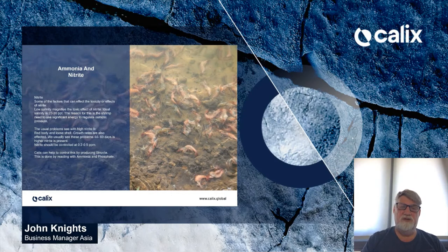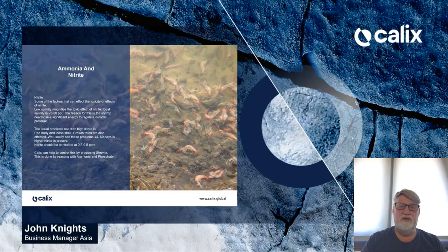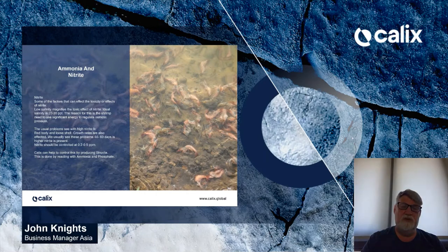Nitrite is more toxic than ammonia, and some of the factors that can affect the toxicity of nitrite include low salinity. Low salinity has a toxic magnifying effect. Ideally salinity should be in the 20 to 30 parts per million range. However, we see cultures down to 5 to 10, and this means the nitrite is more toxic. The reason for this is that in low salinities, the shrimp need to use significantly more energy to regulate osmotic pressure, so the nitrite can much more easily affect them.